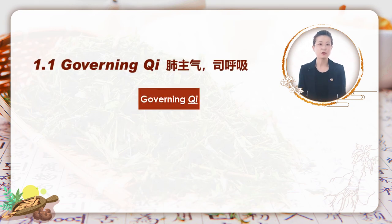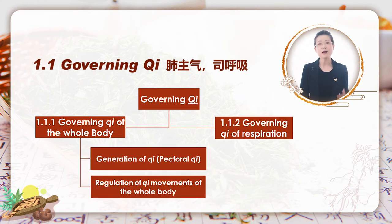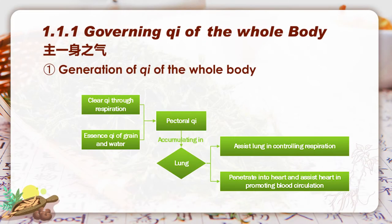Number one: governing qi. First of all, what does qi refer to? Qi can be understood as both qi of the whole body and qi of respiration. Lung can govern qi of the whole body. How does it work? Let us look at the production of qi in the body. Basically, from the source, we have clear qi from the natural world, which is taken into the body through respiration, and essence qi, which is transformed from grain and water — or food.